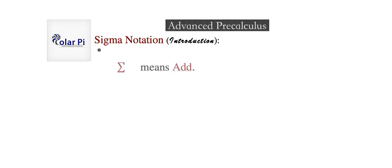A lot of math seems esoteric, but it's not really hard if you're not intimidated by it. All that sigma means is add. Sigma means add. And by the way, this is capital sigma. Lowercase sigma — which you'll learn in calculus 2 — also means add. But anyway, sigma just means add, period.